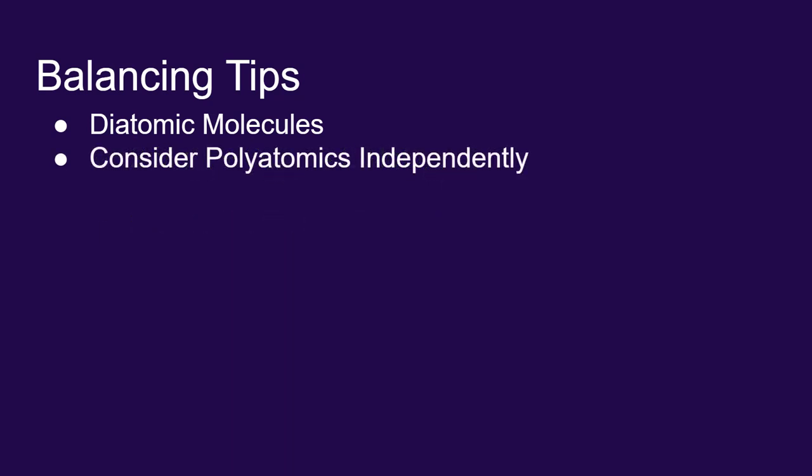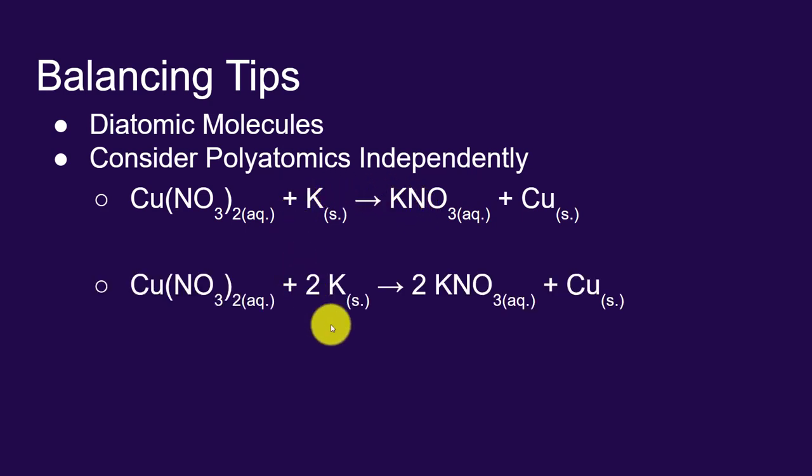The next tip is that I will often consider polyatomic ions as an independent unit. So instead of separating out the elements, I'll try and balance the entire polyatomic ion. If I take some copper 2 nitrate and react it with potassium, you will make potassium nitrate and copper. When you balance it, you'll see that you have two nitrates over here. By putting a 2 in front of the potassium nitrate, that will balance out the nitrates. And then we will balance it out by putting a 2 in front of the potassium. And I think that's much simpler than trying to balance out the nitrogens and the oxygens independently.